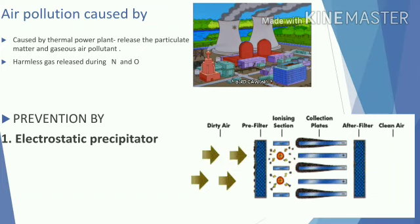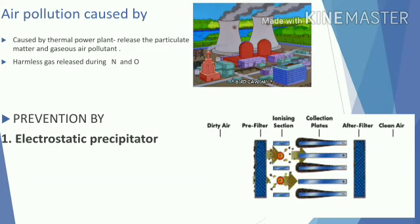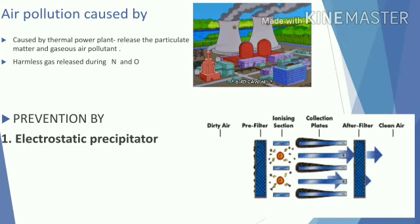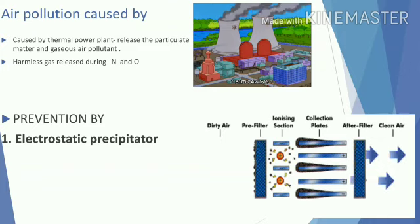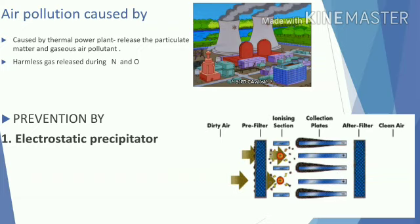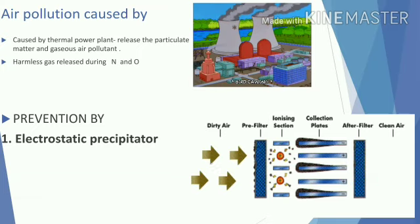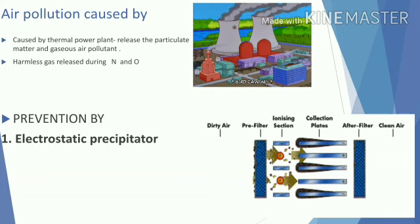The ESP is a device which removes particulate matter or unwanted gases by applying a high voltage electric charge and collecting the particles on a charged plate. By applying an electric field — as the word 'electrostatic' suggests — we are able to obtain clean air.